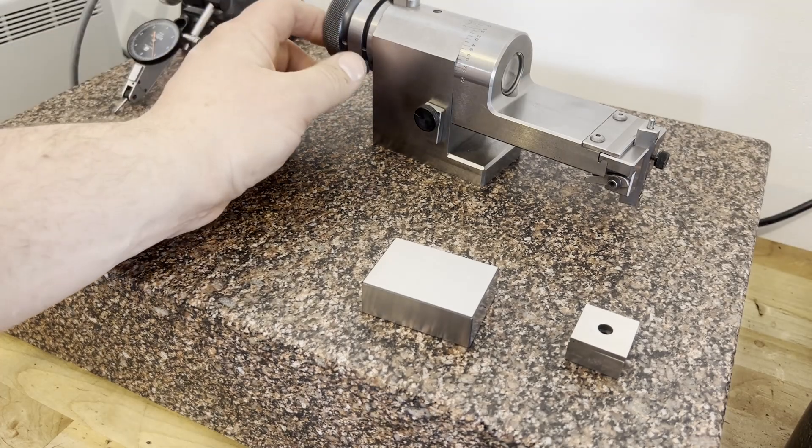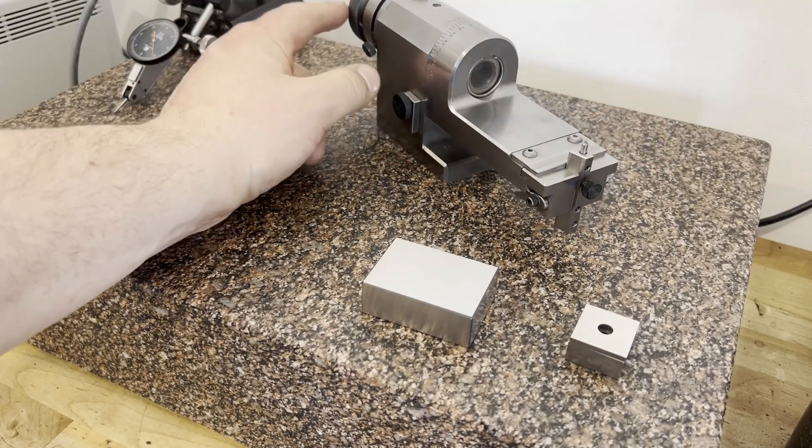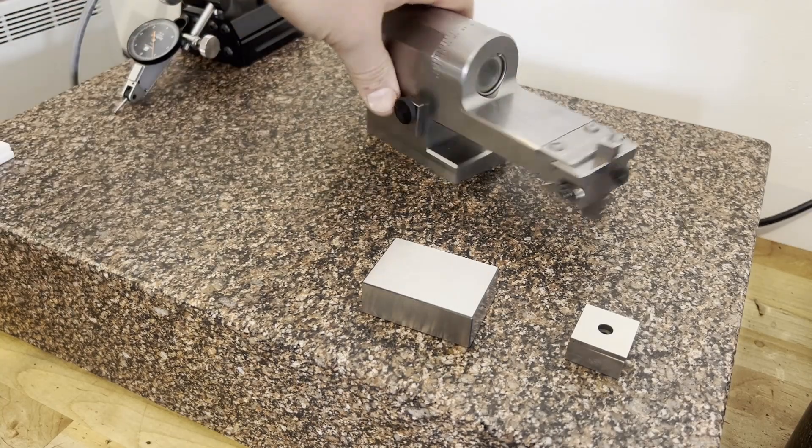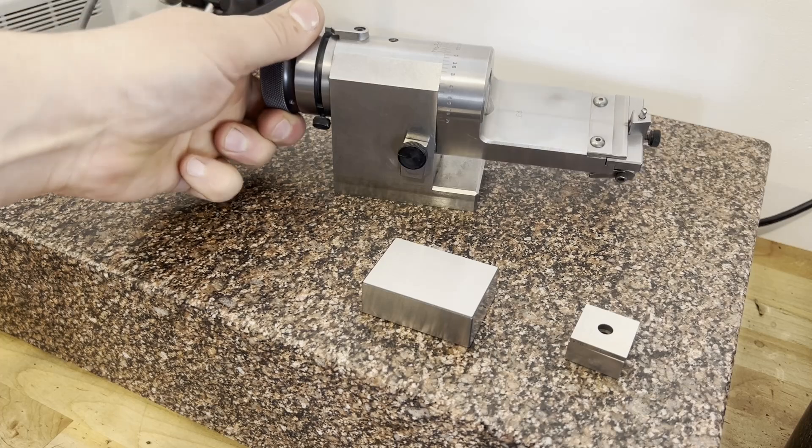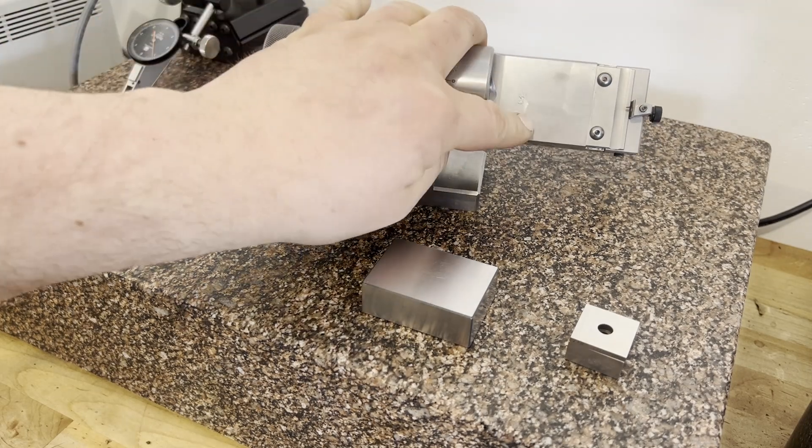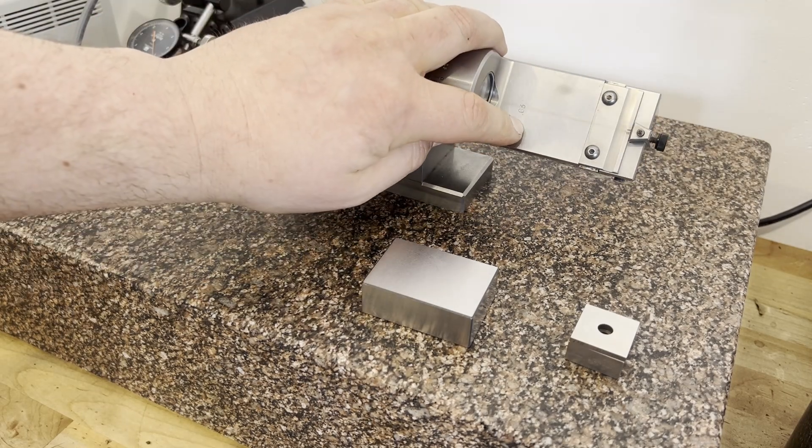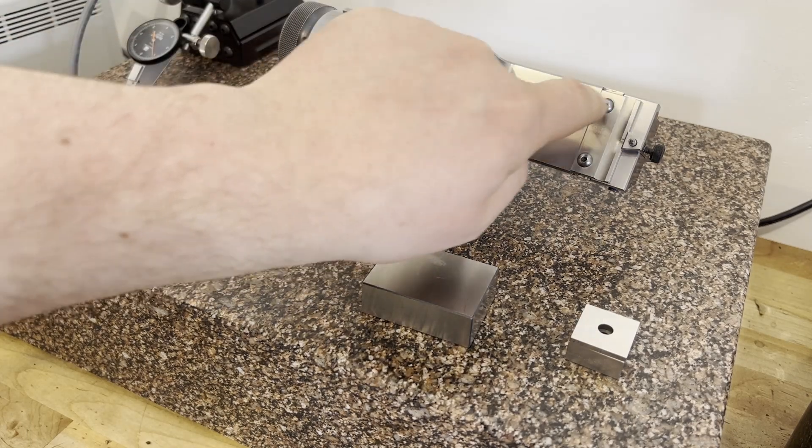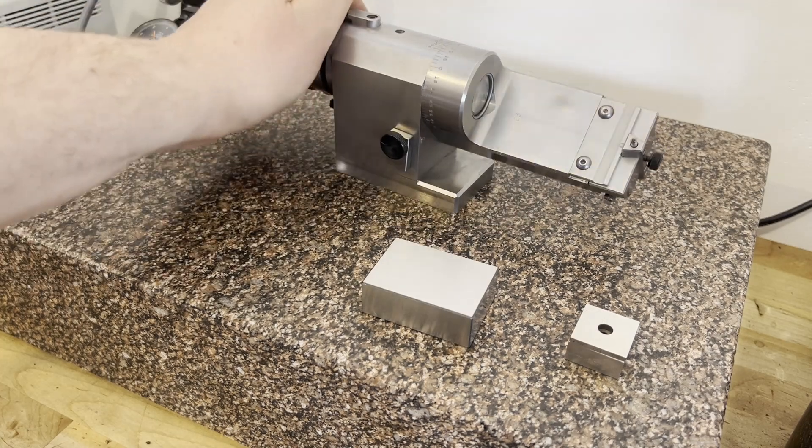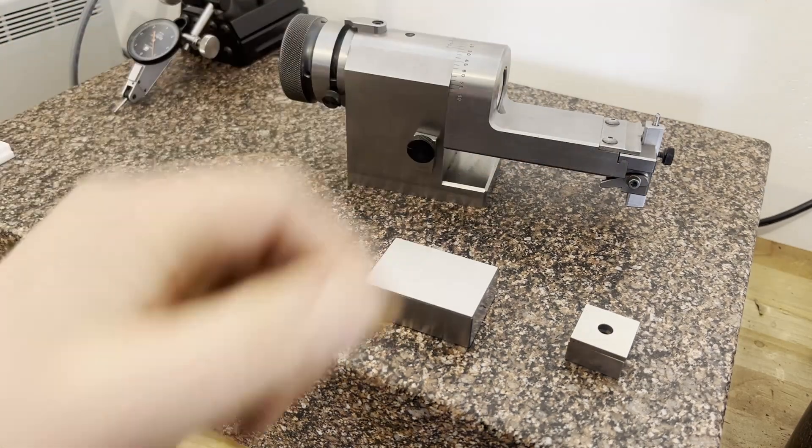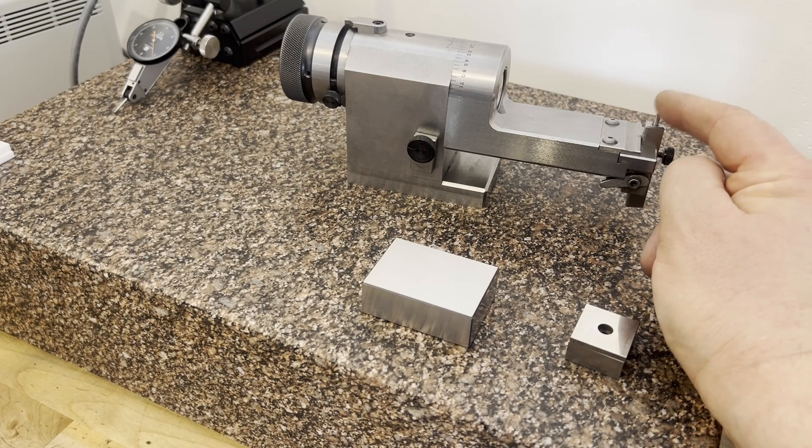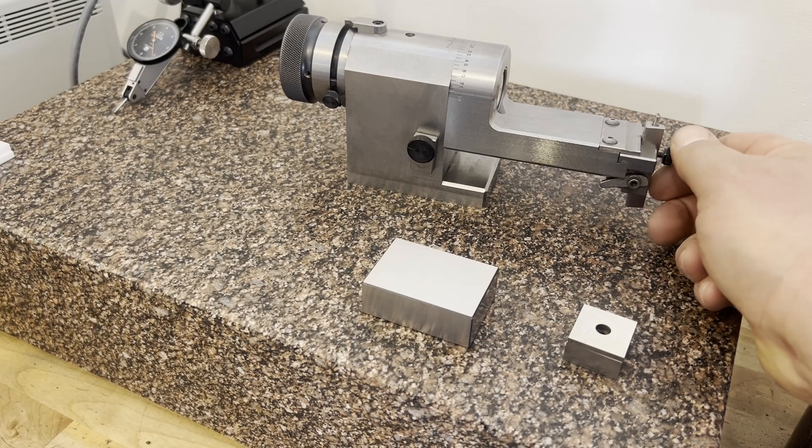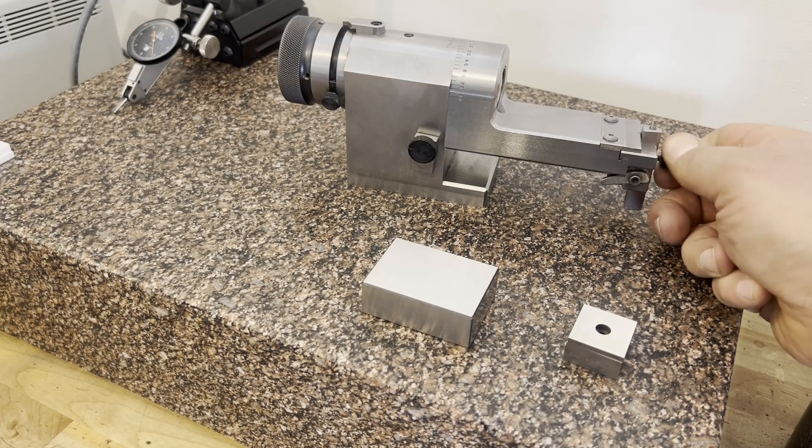Once you get where you're going rotationally, you could then take these slide stops off and you can slide this, so you could theoretically do like a v-shape with a radius. We're just going to be doing a full rad today with it, and so we just need to set the diamond the correct distance from the center.